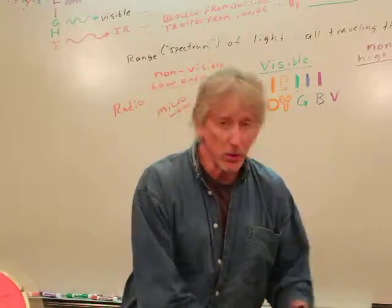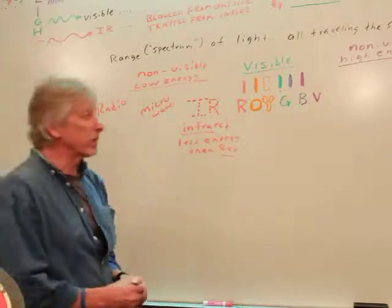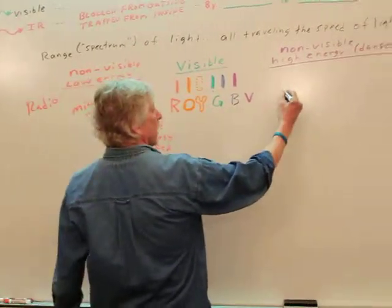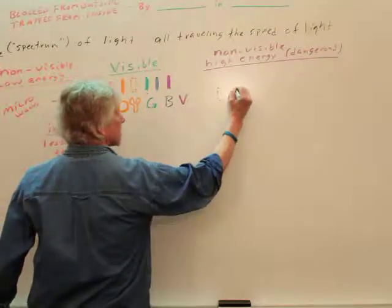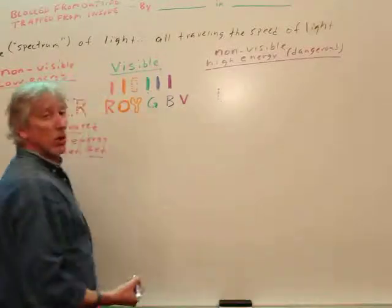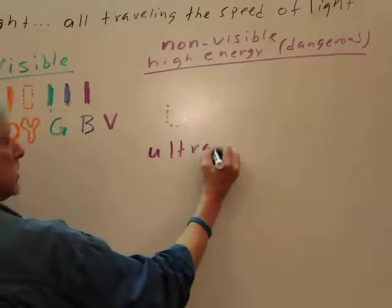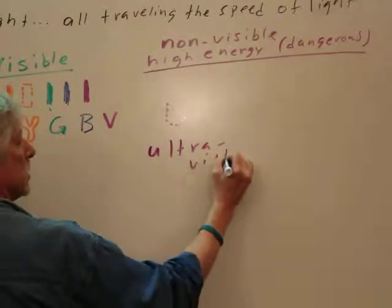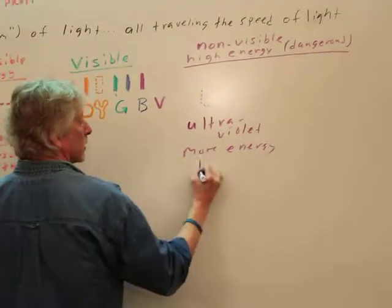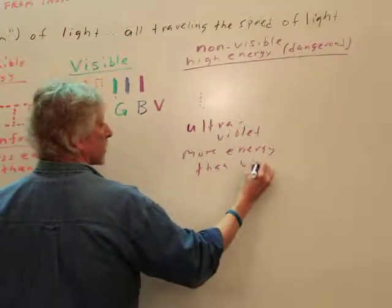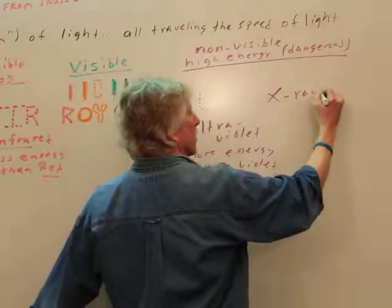So, we've got the other end. The high energy stuff. What's more than violet? Well, that would be... Again, you can't see it. So, just for now, I'm going to make it dashed. You can't see it. I can't see it. Ultraviolet. High energy. Dangerous. Ultra violet. More energy than violet. That's what that means. Ultraviolet. What's more than that? X-rays. What's more than that? Gamma rays.